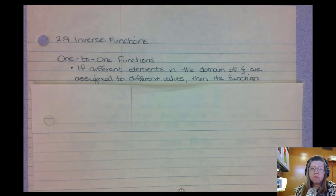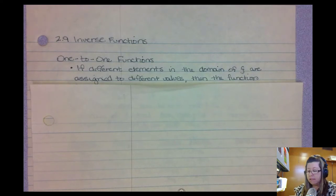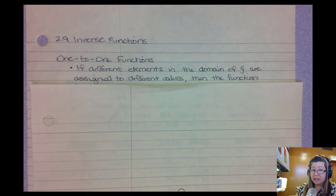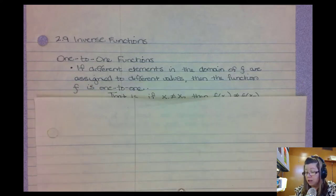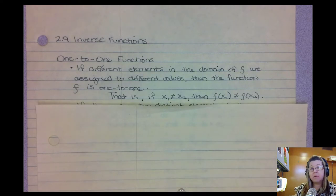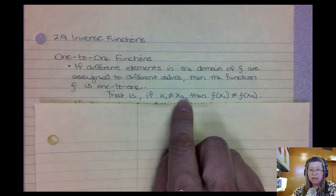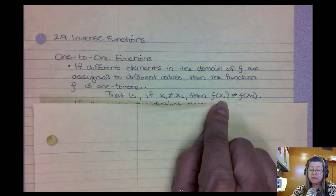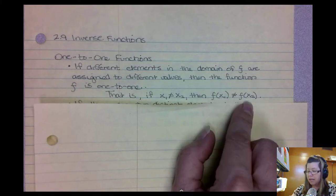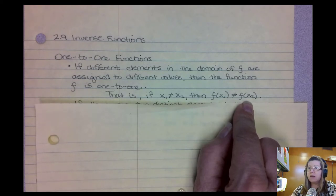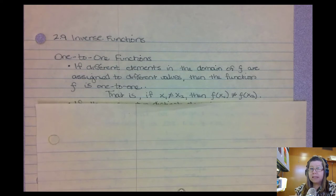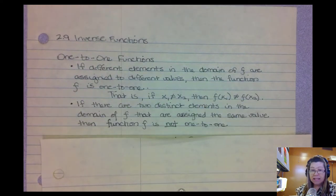The first thing we need to talk about is what is a one-to-one function, because if you're dealing with a function that's a one-to-one function, then the original function will have an inverse function. A one-to-one function means that if you evaluate this function f at two different x values, they do not equal the same value. Every single x goes to a separate y, and every single y came from a separate x. That is what's called a one-to-one.